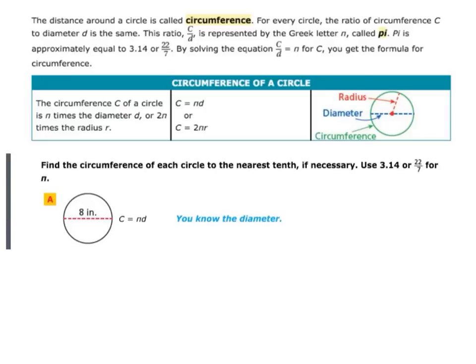A circle is a little more complicated. A circle, the distance around it, we call the circumference. For every circle, the ratio of circumference c to the diameter d is the same. The ratio c over d is represented by the Greek letter n, called pi. Pi is approximately equal to 3.14, or a fraction 22 over 7. And you might want to use both. It depends on what the radius or the diameter are. By solving the equation c over d equals n for c, you get the formula for circumference.